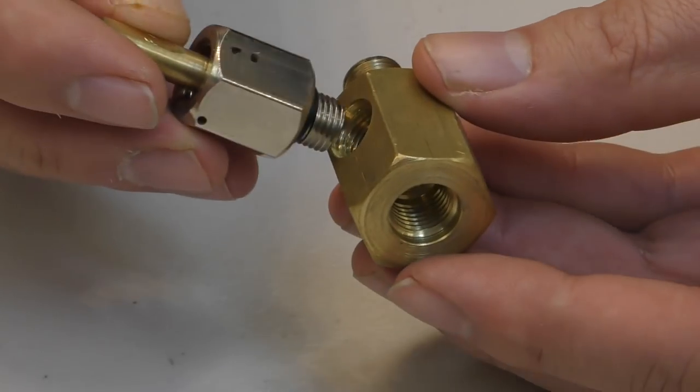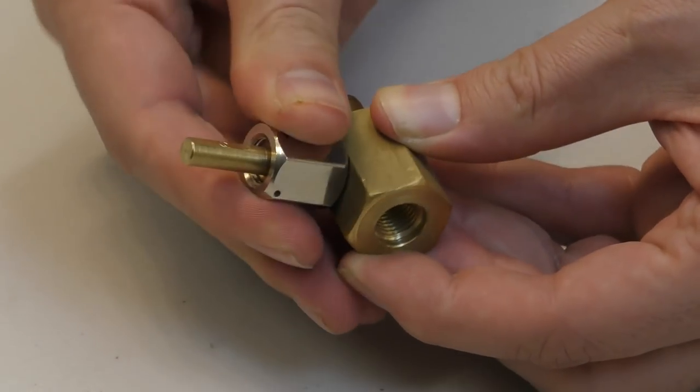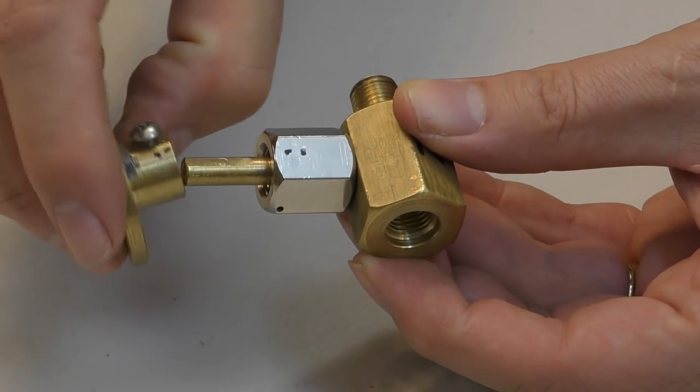Here we're fitting the release valve to the sustainer manifold. Then the lever can just be put on. We'll talk about how these will be controlled in another video.